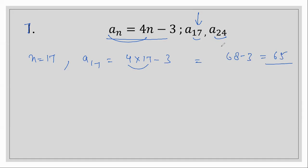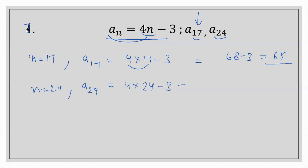Now for a24, n equals 24. We put it in: a24 equals 4 times 24 minus 3. So 24 times 4 is 96, minus 3, which equals 93. So the 17th term is 65 and the 24th term is 93.